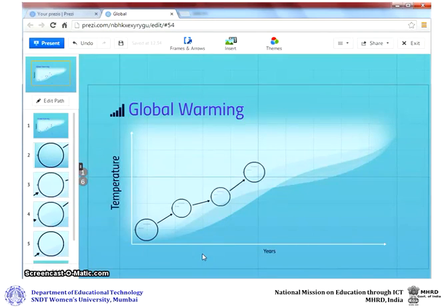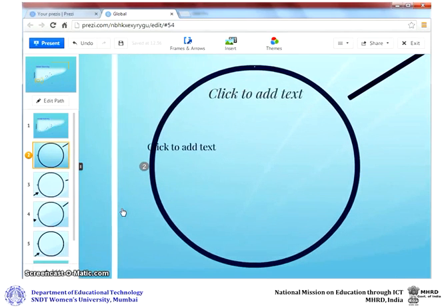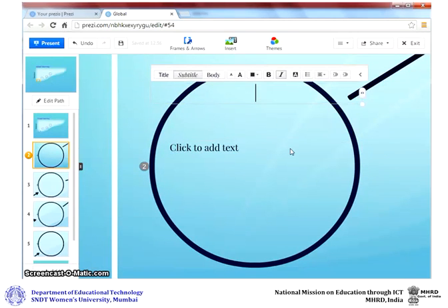Let us start designing the frames. Click on it and click zoom to frame. Once the frame is zoomed, you can add title. You can also copy paste from an existing document.